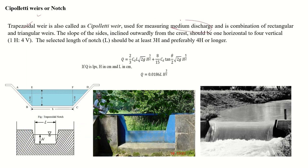The trapezoidal weir, also called the Cipolletti weir or Sutro weir, is used for measuring medium discharge. The side slope provided is one horizontal to four vertical. It is a combination of the rectangular weir and V-notch. The discharge formula for this weir is also a combination of rectangular weir and V-notch formulas, and a simplified equation is 0.0186 · L · H^(5/3) in liters per second with head in centimeters.